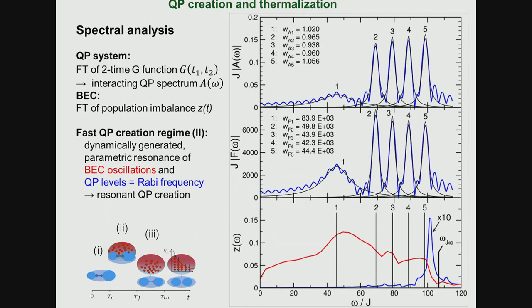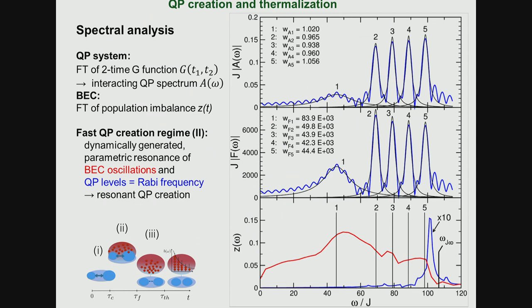What is plotted here is the so-called population imbalance. It's the population difference between the two wells, N_1 is population of one well and N_2 is the population of the second well, normalized by the total particle number which stays constant. You can see first of all that indeed the system thermalizes nicely, because quasi-particles are excited and because of quasi-particle collisions.